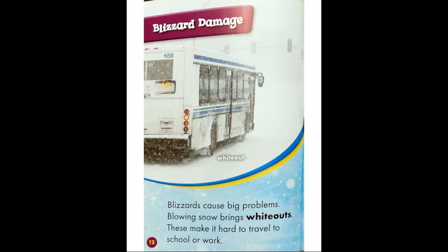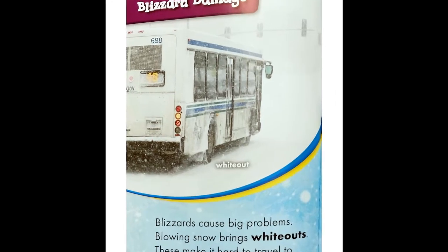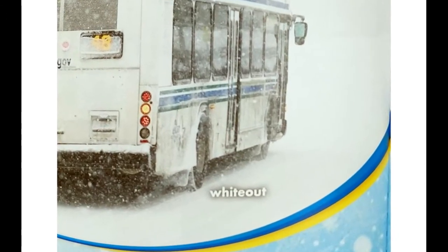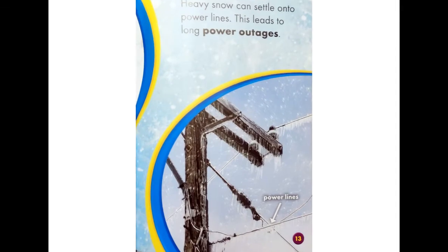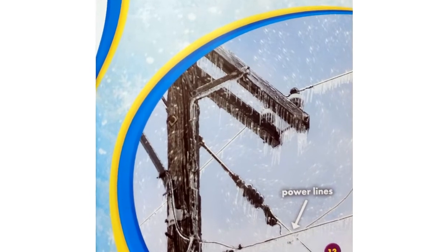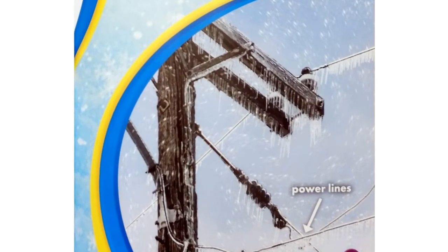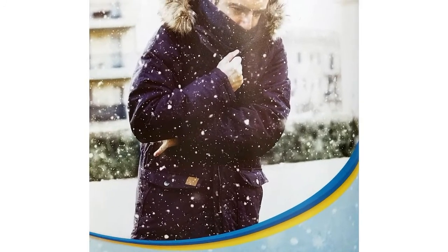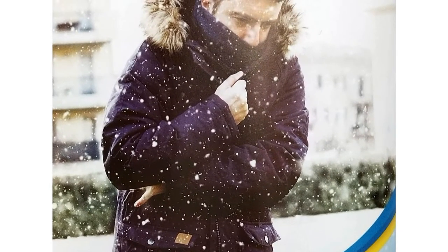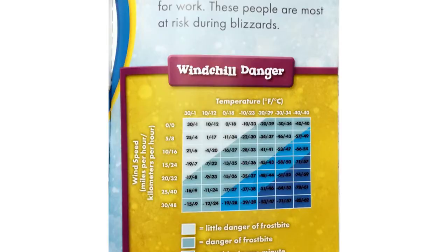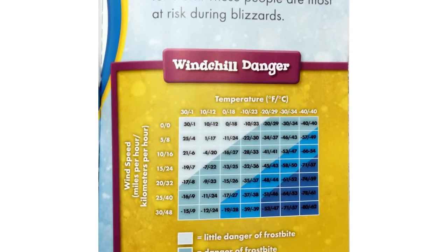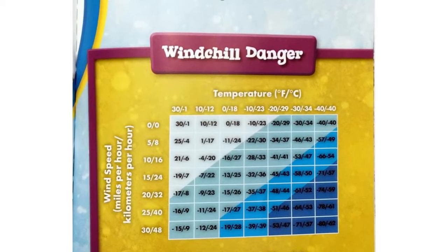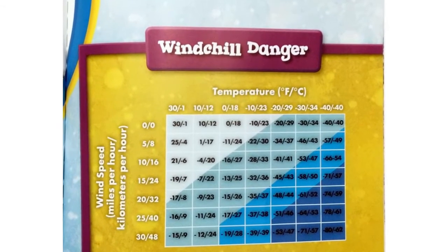Blizzard damage. Blizzards cause big problems. Blowing snow brings whiteouts. These make it hard to travel to school or work. Heavy snow can settle onto power lines, leading to long power outages. Low wind chill can lead to frostbite. People stuck outside are in danger. Some people do not have warm shelter. Others must leave home for work. These people are most at risk during blizzards.